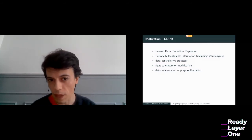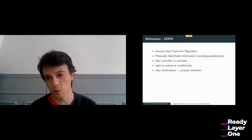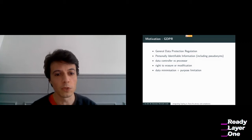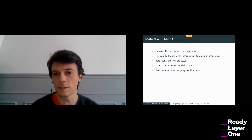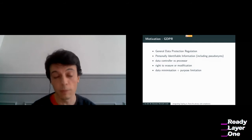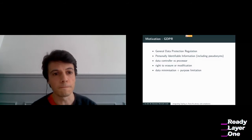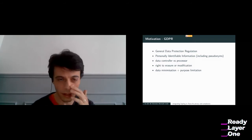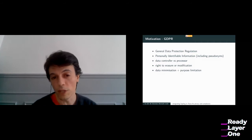People sometimes forget that not only is privacy important in general, but there's also regulation you need to abide by. A few concepts everyone should be familiar with: personally identifiable information is basically everything that can be linked back to an individual, and it's very important to remember that pseudonyms fall into this category. Just because you're using an address that looks like random numbers and letters doesn't mean the system is anonymous — it's just pseudonymous.